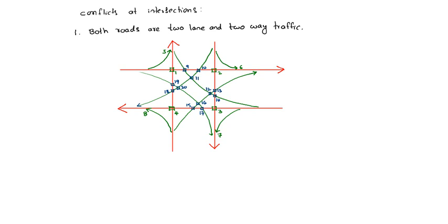Conflicts 21, 22, 23, and 24 — merging from the right side is also a conflict. So total 24 conflicts are there. Total conflicts are 24 in number.